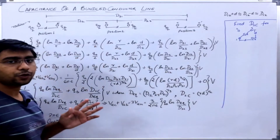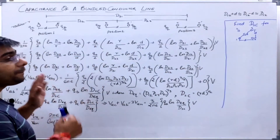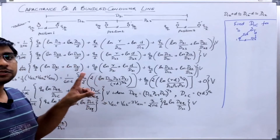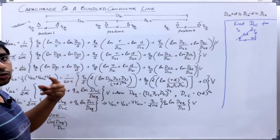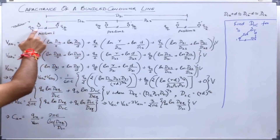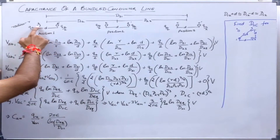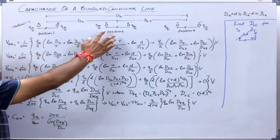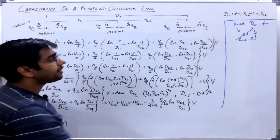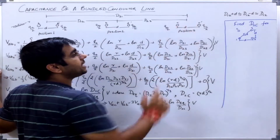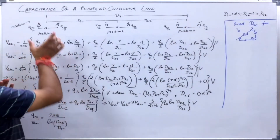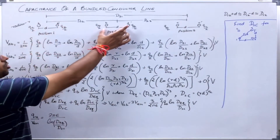Here I have shown a bundle conductor line in which there are two strands per phase, that is two conductors per phase. For phase A it is A and A dash, for phase B it is B and B dash, and for phase C it is C and C dash. The spacing between the conductors of the same phase is given as small d.